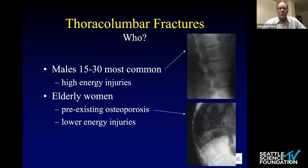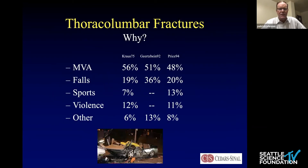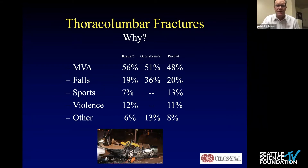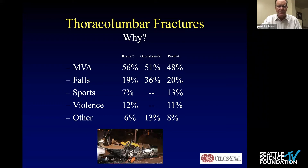Who gets thoracolumbar fractures? Males aged 15 to 30 are the most common group. Elderly women have osteoporotic fractures — a whole different kind of injury — and those are low-energy injuries. Motor vehicle accidents are the most common cause, followed by falls. Sports is actually a pretty infrequent cause, and violence accounts for a pretty high number, which is interesting.